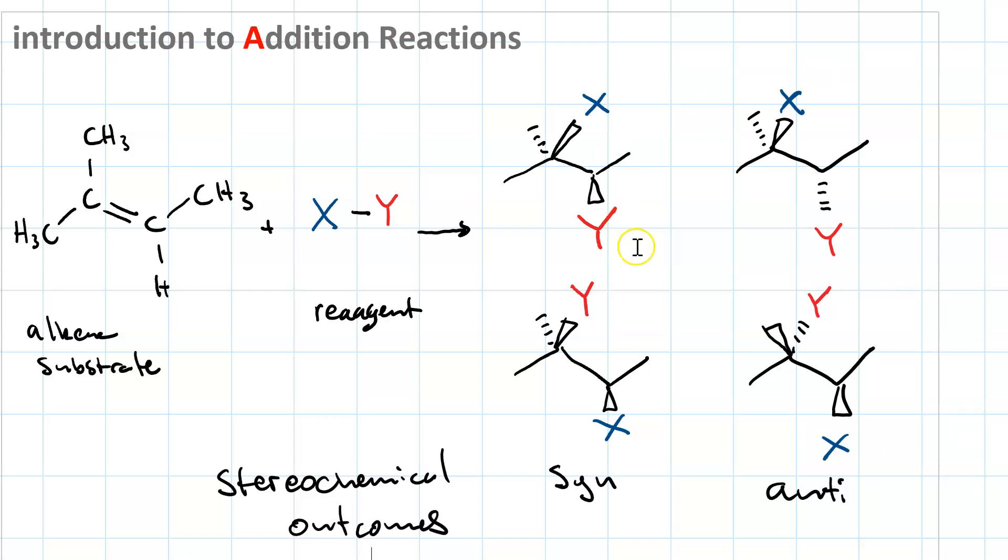Does this represent all possible outcomes? No, it doesn't. We could have y on the more substituted on a dash and x on the less substituted on a dash. That would be syn. That would mean this methyl group is on a wedge. Or we could put x on the more substituted on a dash and y on the less substituted on a dash and then change this methyl group to a wedge. That would also be syn. So there's two more syn possibilities and there's two more anti possibilities. That's eight possibilities in all.